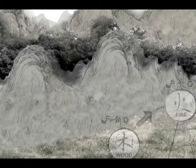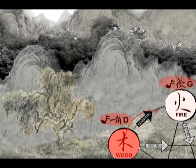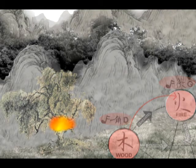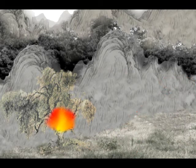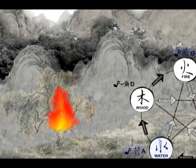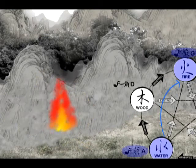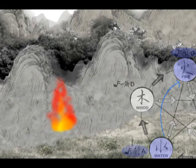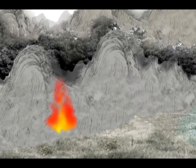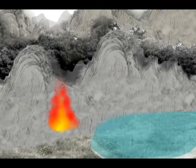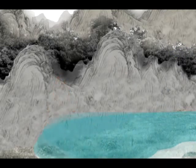The correspondence between musical notes and features of the painting is based on the five-element theory. The sequence of notes played generates and destroys objects in the painting according to the wu xing cycles of balance. Wood generates fire. Water overcomes fire.